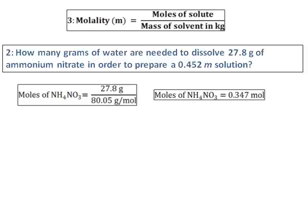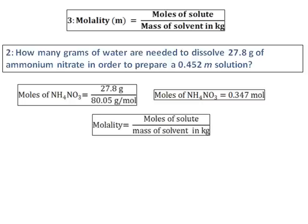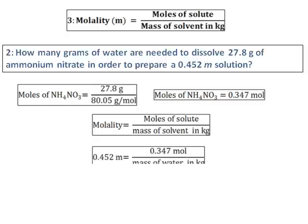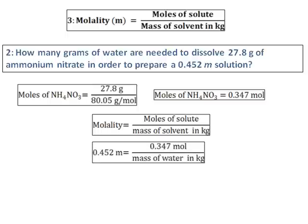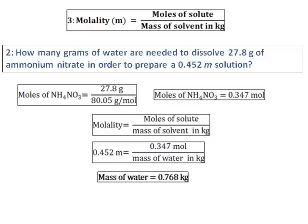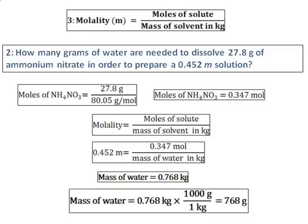Once we get the moles of ammonium nitrate, from the equation for molality — molality equals moles of solute divided by mass of solvent in kilograms — I can get the mass of water. Molality is given as 0.452 and the moles of ammonium nitrate is 0.347, so mass of water is 0.768 kilograms. The answer is asked in grams, so convert to get 768 grams.